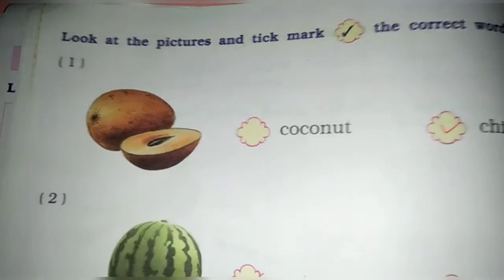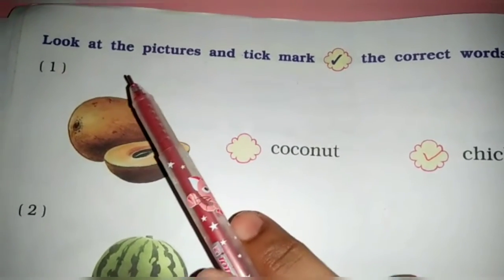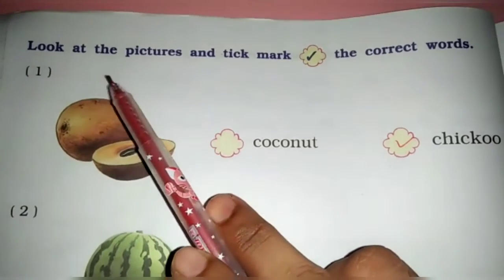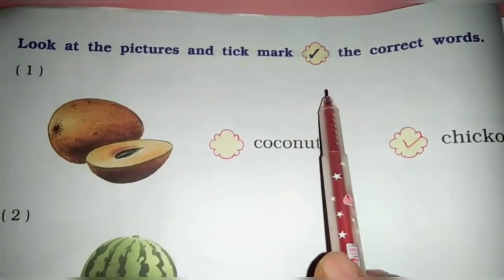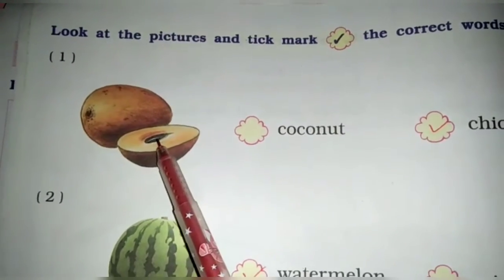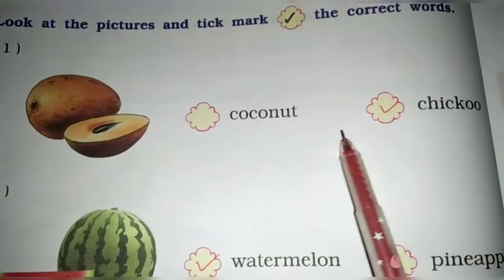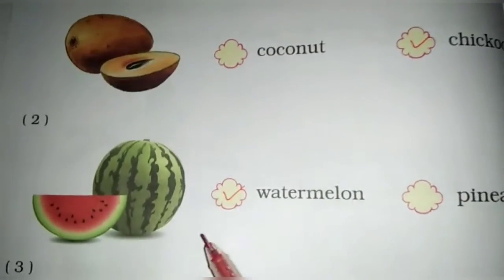Now page number 96. Next exercise is. Look at the pictures and tick mark. Write the correct words. Which fruit? Yes. This is Chiku. So write the tick. Chiku.